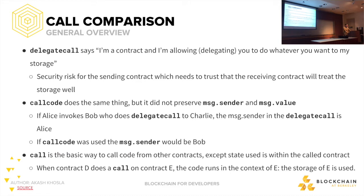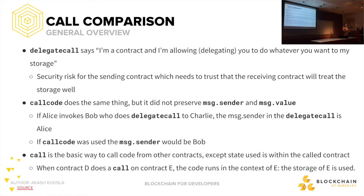With delegate call, it's important to compare to other call types. Delegate call basically says: I'm a contract and I'm allowing you to do whatever you want with my storage — a huge security risk, because the sending contract needs to trust the receiving contract will treat its storage well. Call code does the same thing but did not preserve message.sender and message.value. So if Alice invokes Bob who does delegate call to Charlie, message.sender in the delegate call is Alice. If call code was used, message.sender would be Bob. Call is the basic way to call code from other contracts, where state is used within the called contract's scope.